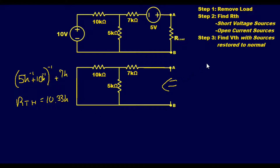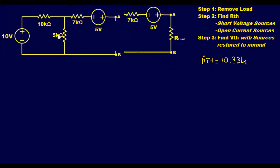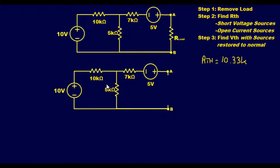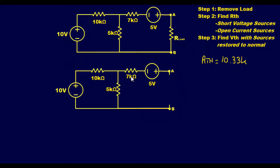R_thevenin equals 10.33k ohms — we'll put that to the side. Now let's clear the circuit and find V_thevenin. Same as last time, we restore our voltage sources and keep the resistive load removed. This is where it gets trickier — what trips people up is right in this area.